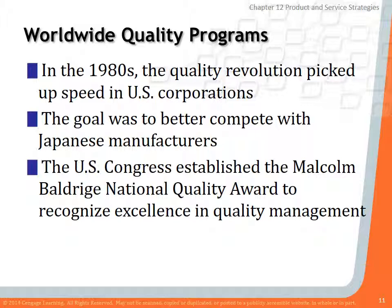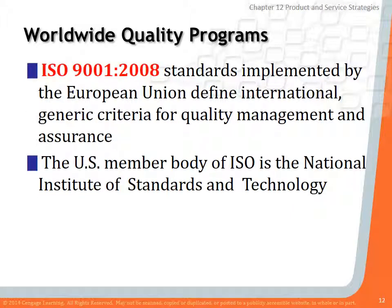There are many worldwide quality programs. One that many companies strive for in the U.S. is called the Malcolm Baldrige National Quality Award. Achieving this award — which is not easy — tells consumers that this company is top quality. There are also ISO 9001 standards developed internationally, which say that to be qualified as a quality producer of products and services, you need to achieve certain targets. Doing so sends a message to customers that this company has world-class quality processes in place, so you know your product or service will be good.